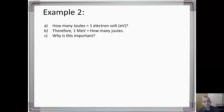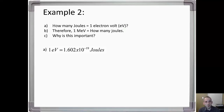Example two: how many joules are in one electron volt? One electron volt is 1.602 times 10 to the minus 19 joules. But more importantly, one MeV is equal to 1.602 times 10 to the minus 13 joules. That is the key unit conversion here — but why is this important?